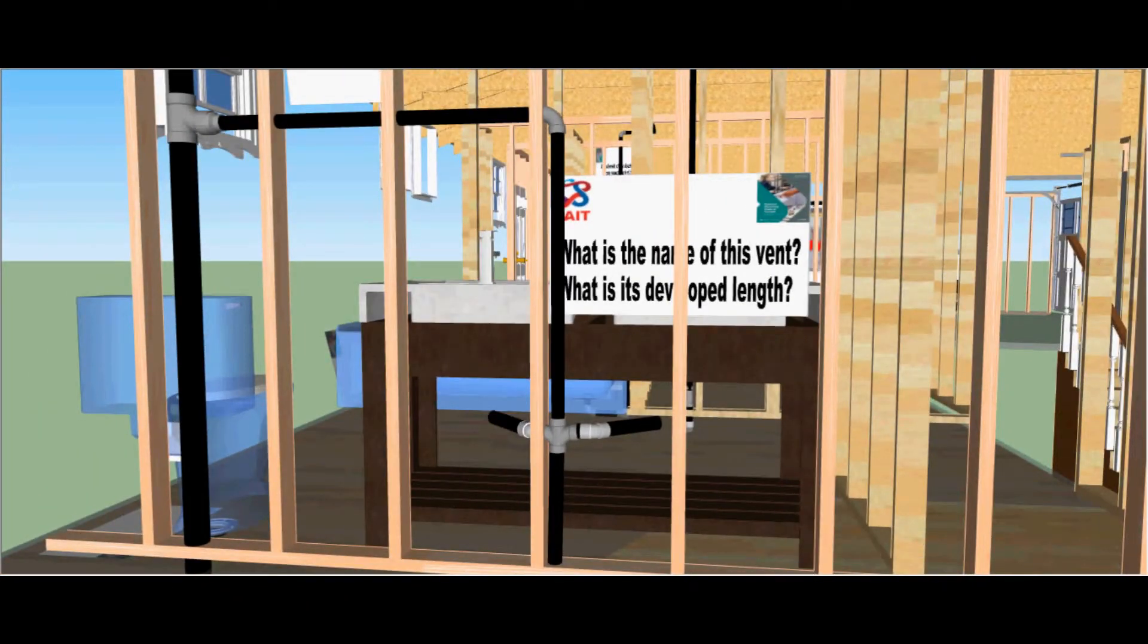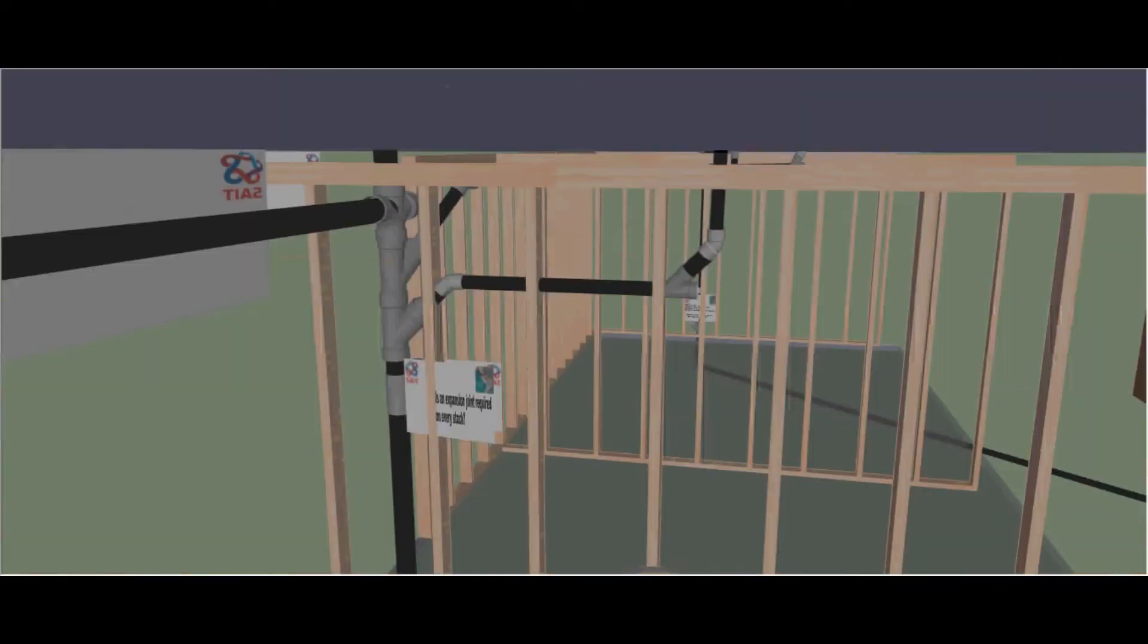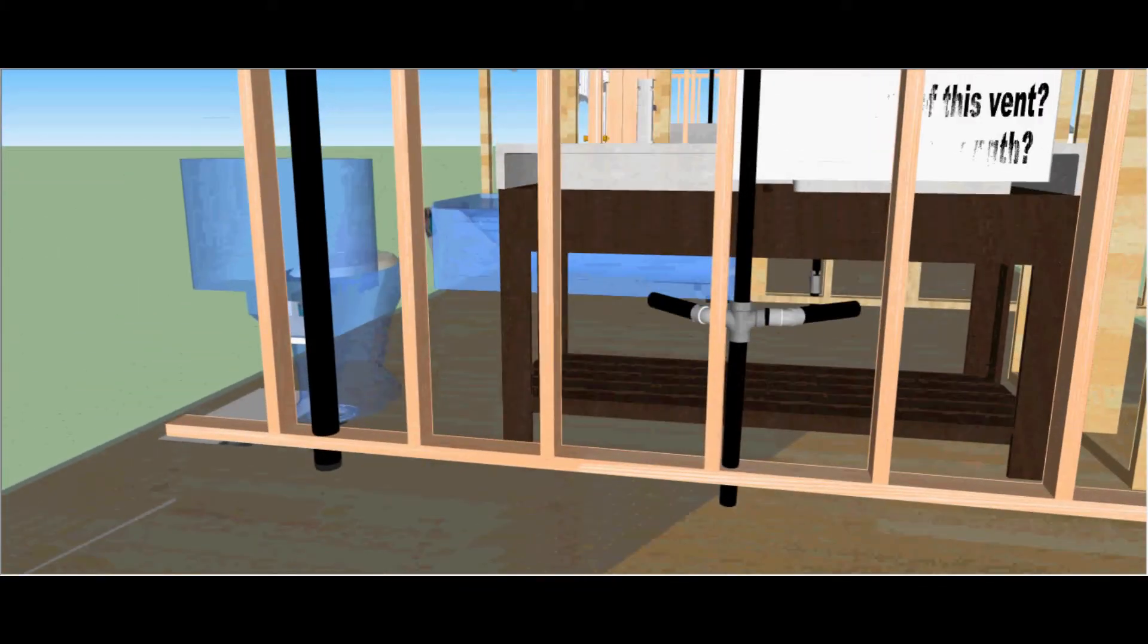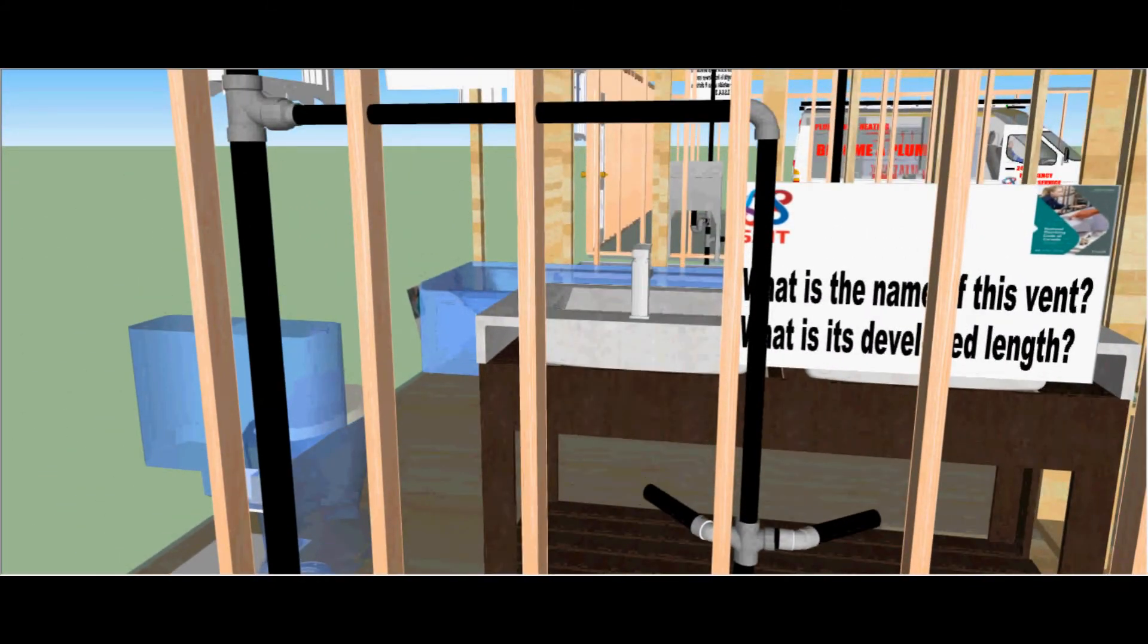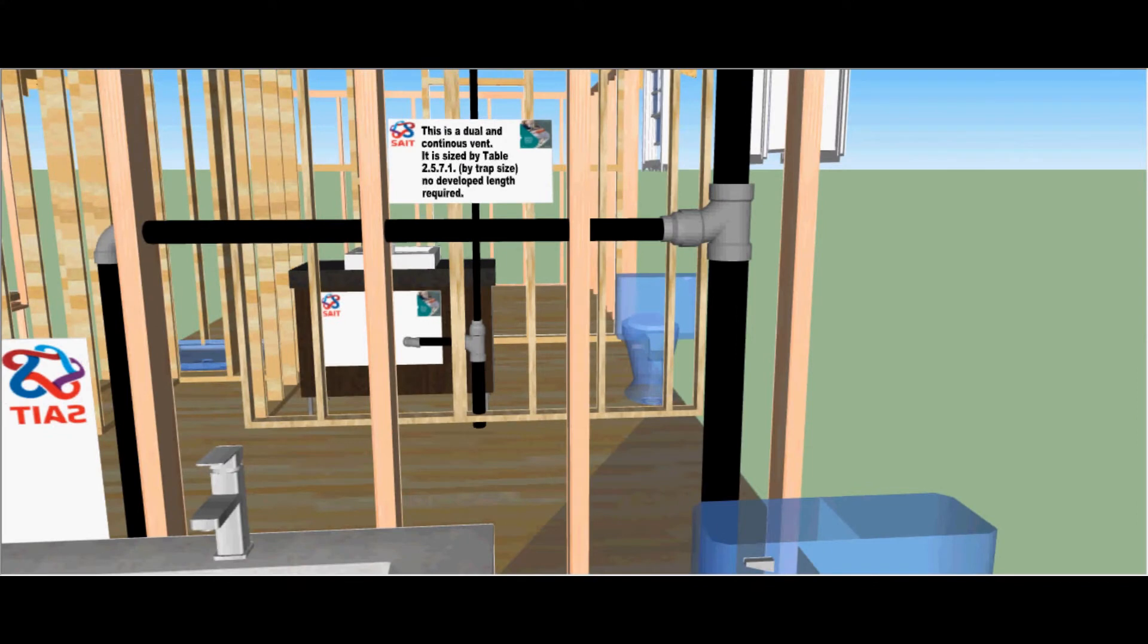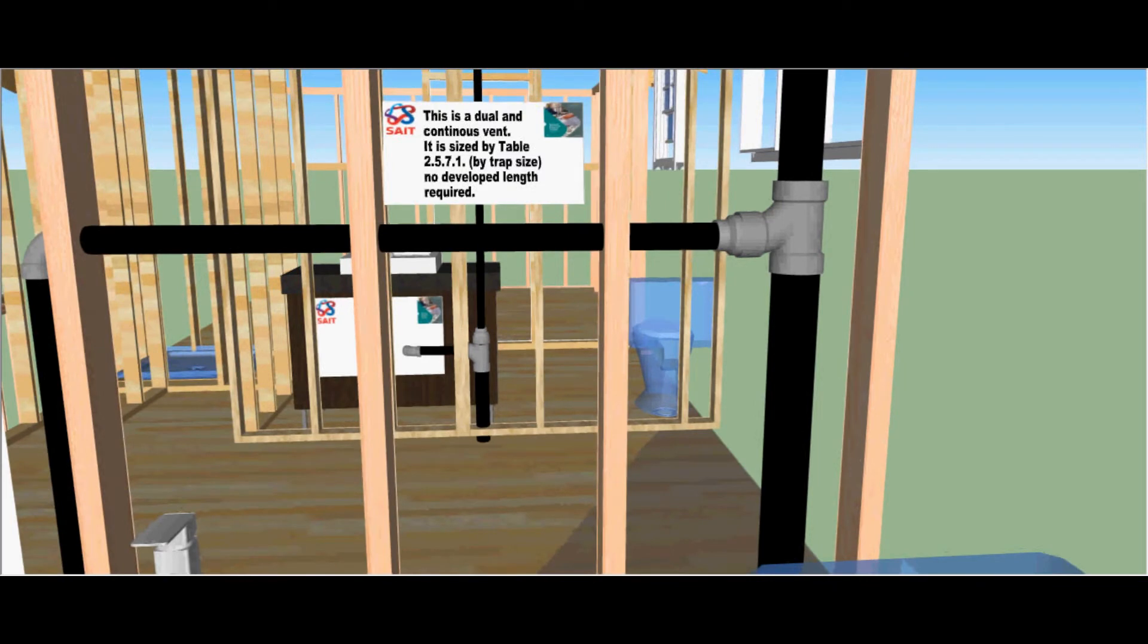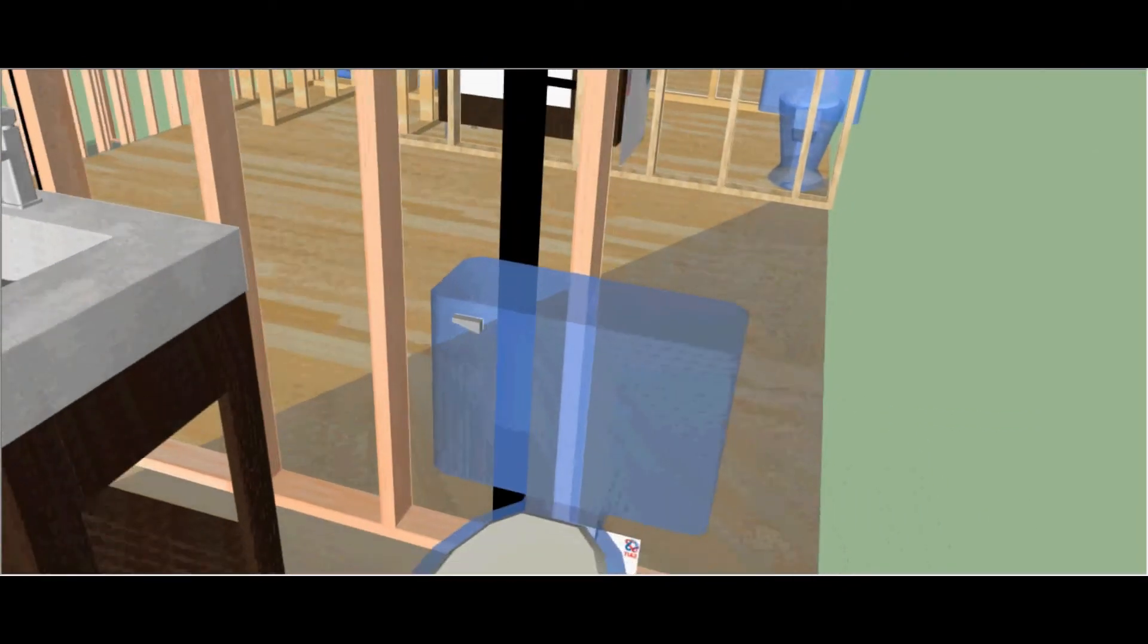What is the name of this vent? What is its developed length? As you can see it ties into the stack below the toilets. It has a vent that ties up above into the stack above. This is a dual continuous vent. It is sized by table 2571 by trap size. In this case no developed length is required on a dual or continuous vent or dual and continuous vent.